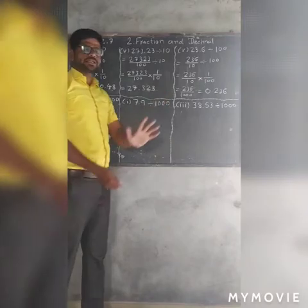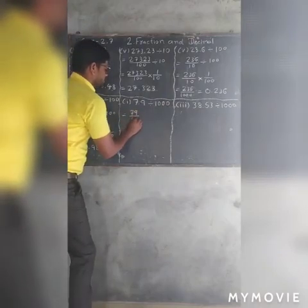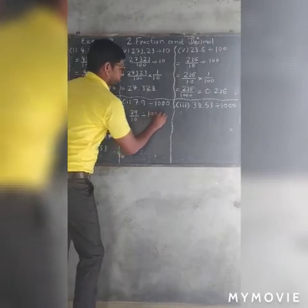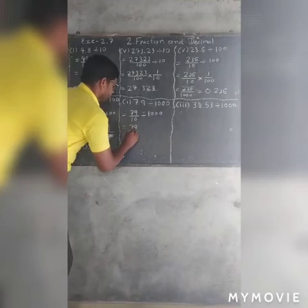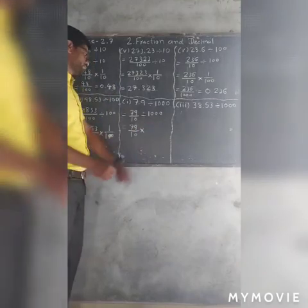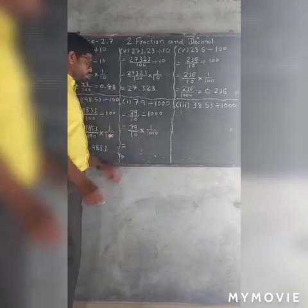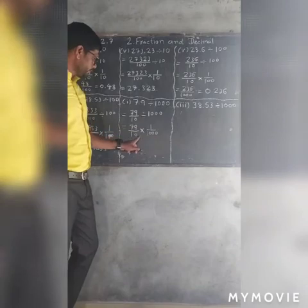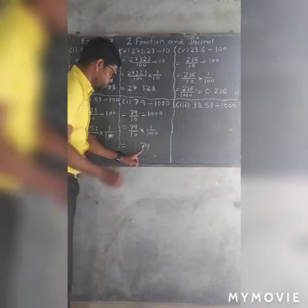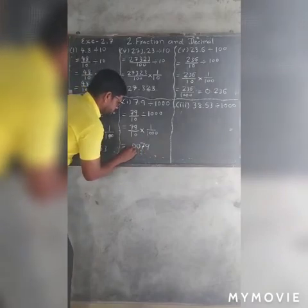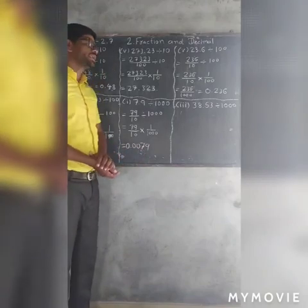Now, divided by 1000. The number is 7.9. First, moving to fraction: 79 over 10, divided by 1000. So 79 over 10, multiply by the reciprocal of 1000, which is 1 over 1000. Now counting zeros: 1, 2, 3, 4. Write 79 and count 1, 2, 3, 4. Our answer is 0.0079.